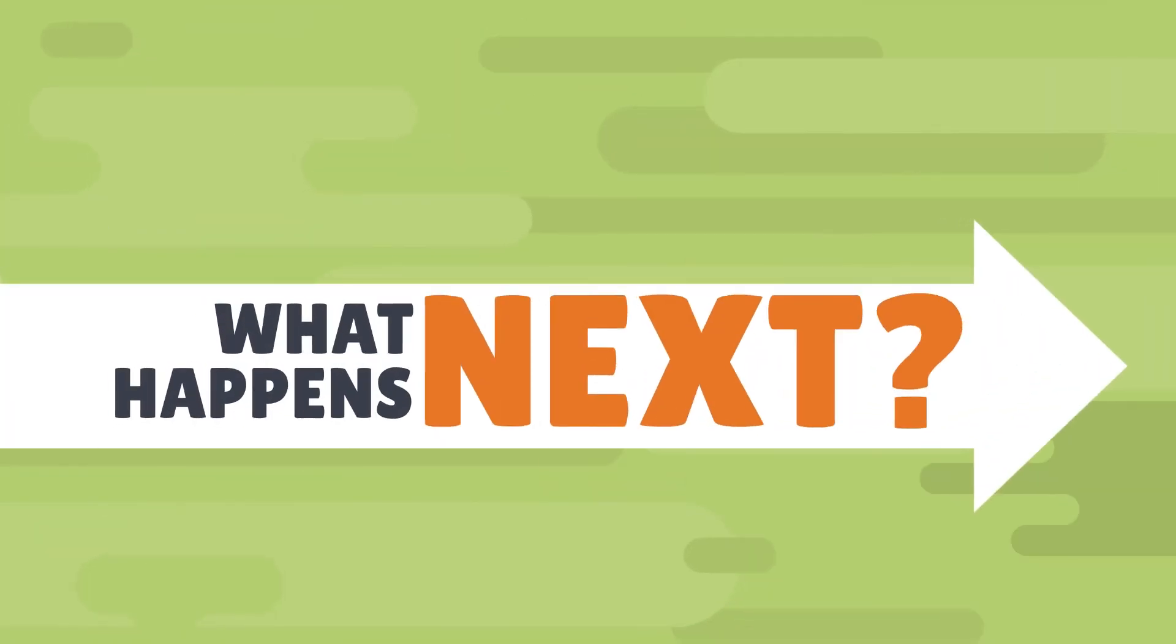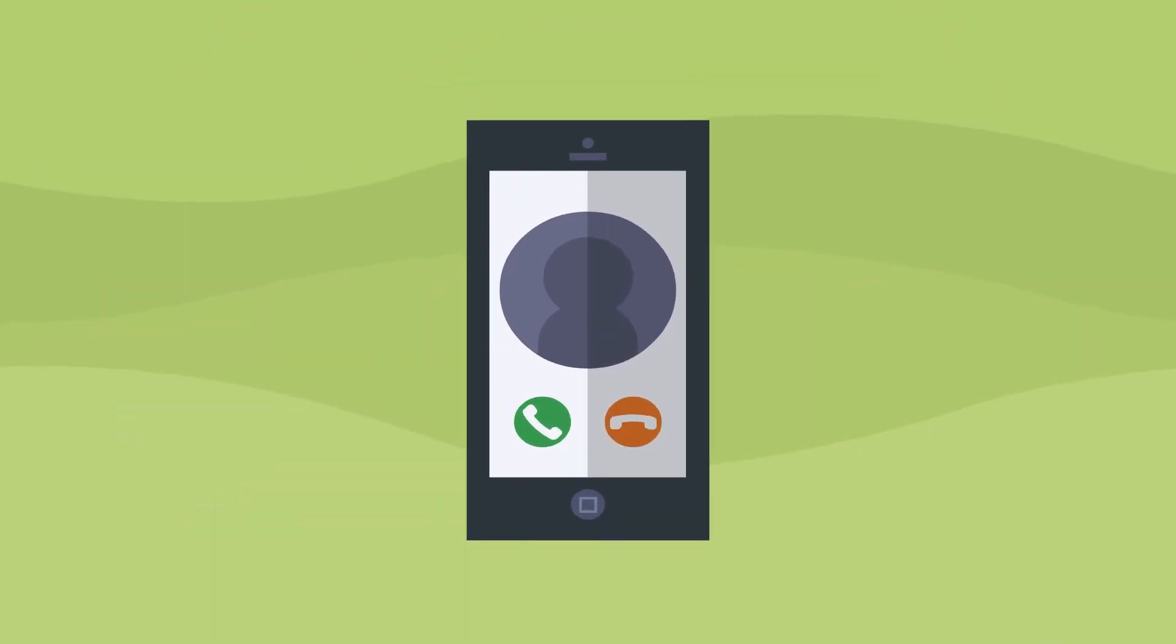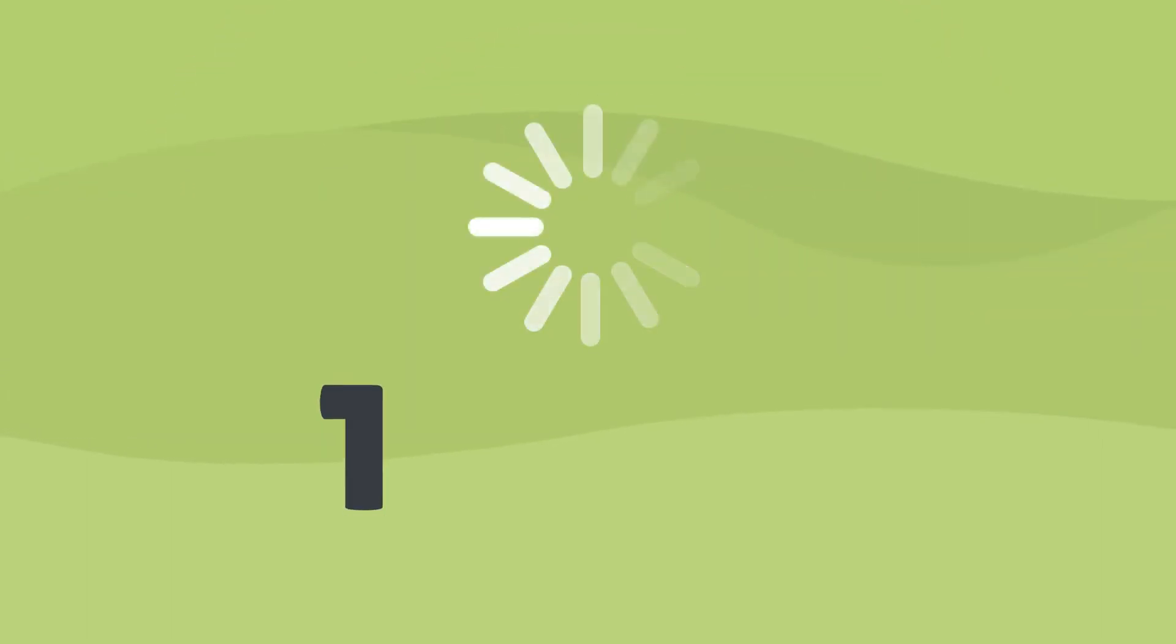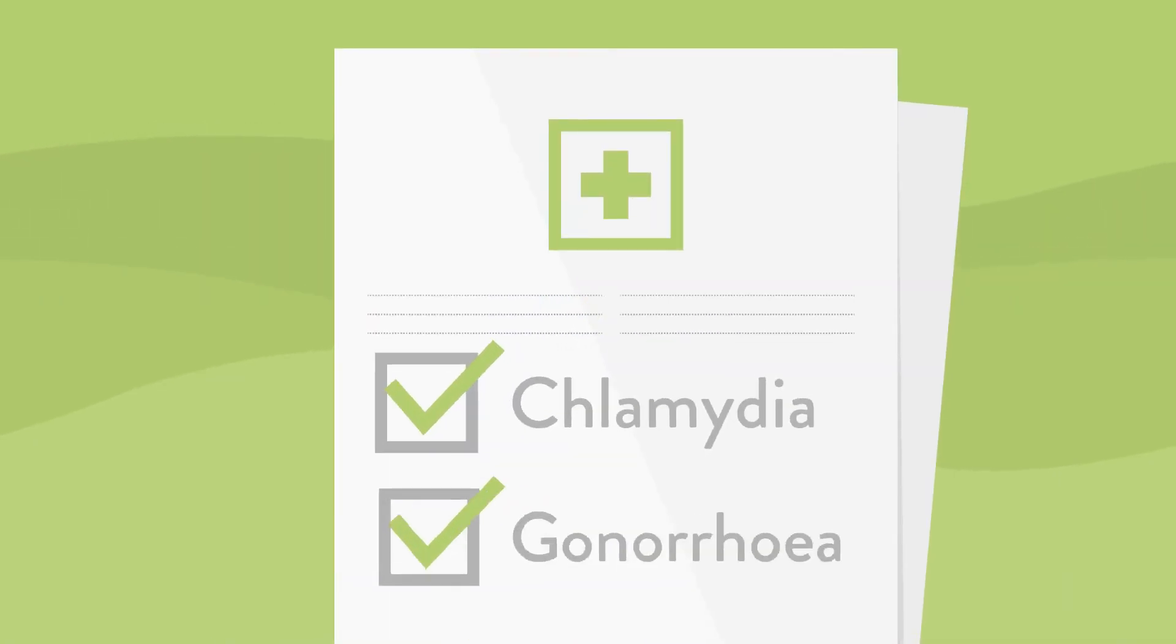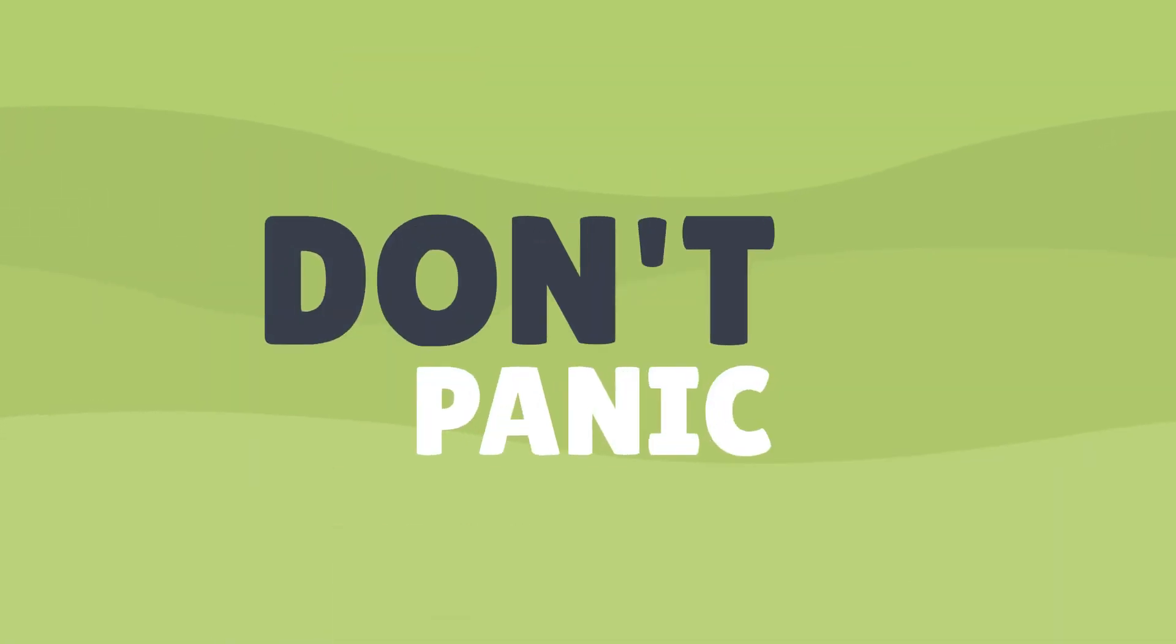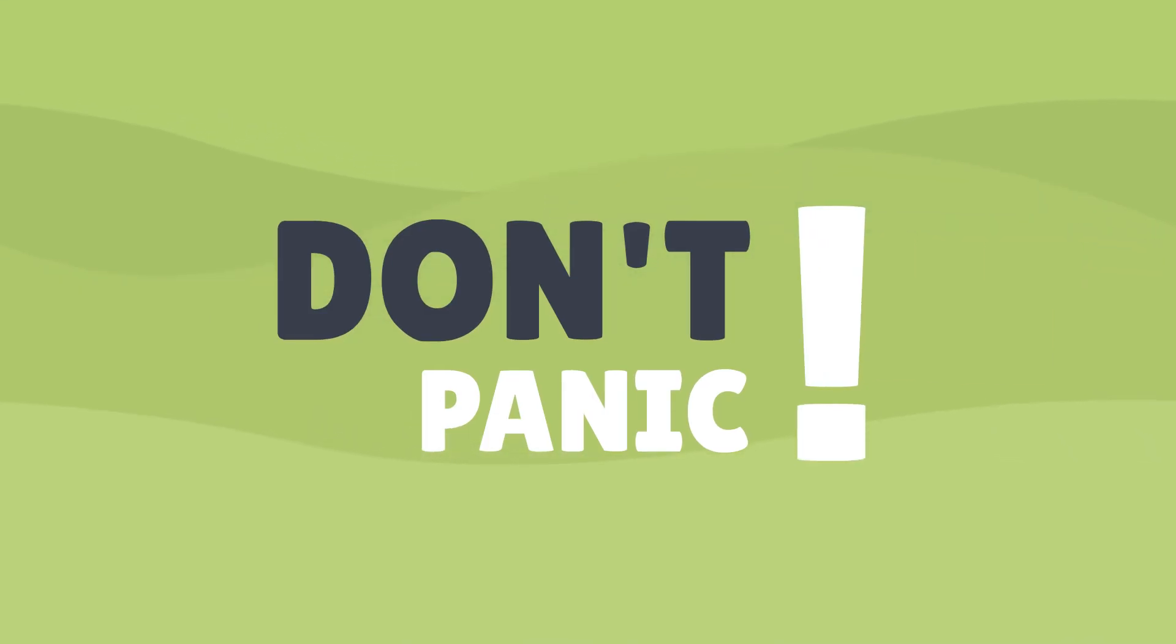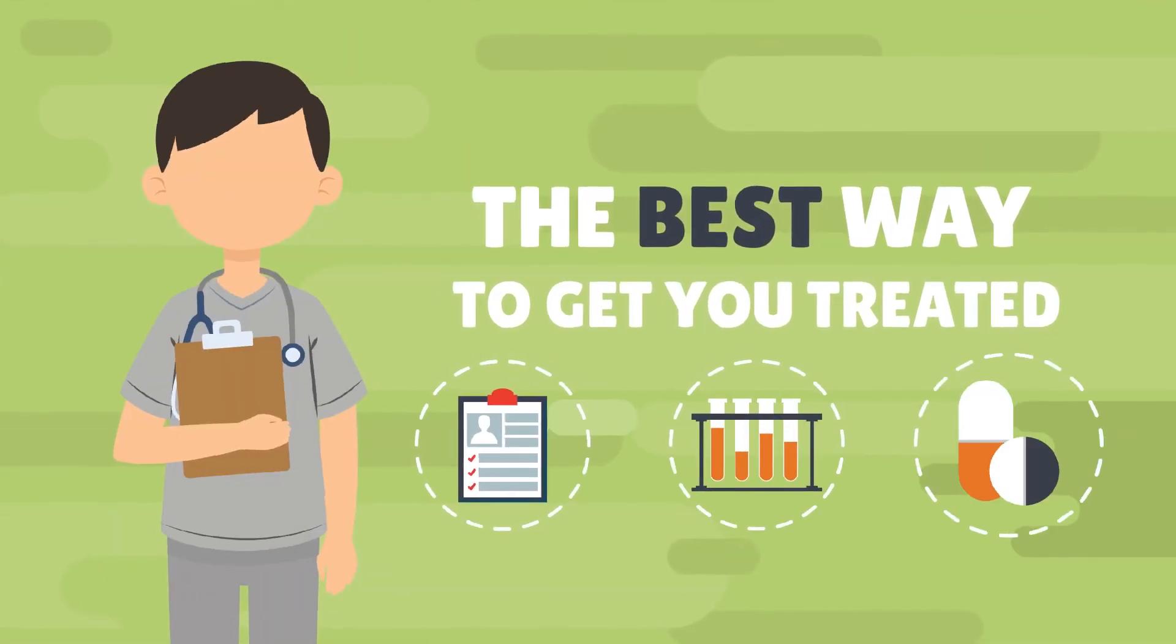So what happens next? Using the contact details you put on the form, you'll be contacted with your results. It usually takes about one to two weeks. If you test positive for chlamydia or gonorrhea, then don't panic. It's not the end of the world. The nurse will work with you to find the best way to get you treated.